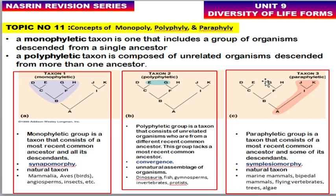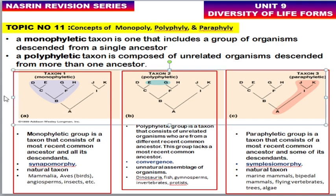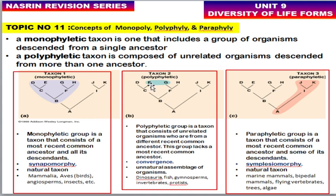Next topic: monophyly, polyphyly, and paraphyly. A monophyletic taxon includes a group of organisms derived from a single ancestor. A polyphyletic taxon is composed of unrelated organisms descended from more than one ancestor. Please copy the diagram in your revision notebook as CSIR has asked diagram-based questions. In the polyphyletic group, the recent common ancestor is not included, and the organisms come from different ancestral lineages.